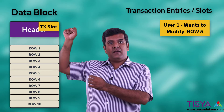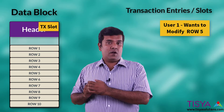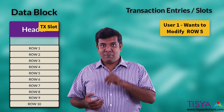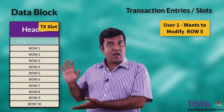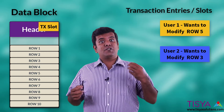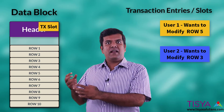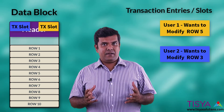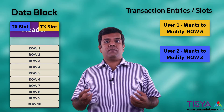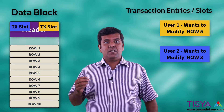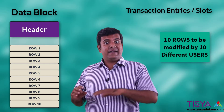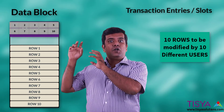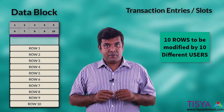The block is now aware there is one DML occurring on one of the rows. If a second user wants to perform a DML on another row in the same block, that user should also acquire a transaction entry or transaction slot in the header. Each transaction slot typically occupies around 23 bytes of space. So if you want to allow ten different rows to be manipulated in ten different DMLs, the header should be capable of allocating ten different transaction entries.